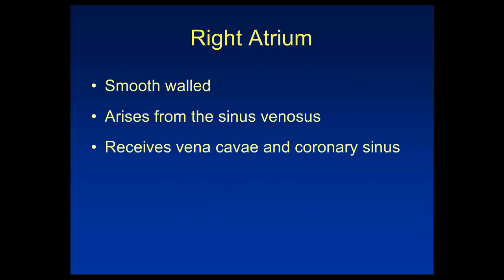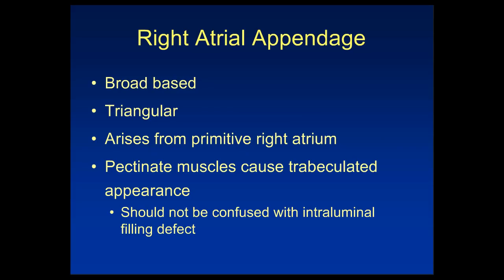We'll begin our tour of anatomy with the right atrium. The right atrium is smooth-walled and arises primarily from the sinus venosus. It receives blood from the superior and inferior vena cava, as well as the coronary sinus. The right atrial appendage is broad-based and triangular in shape, arising embryologically from the primitive right atrium. It has pectinate muscles which cause a trabeculated appearance, and it's important that we don't confuse these trabeculae with intraluminal filling defects.